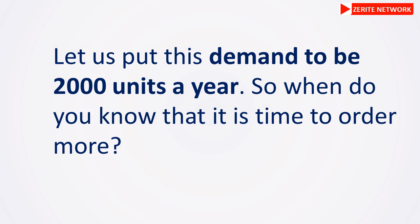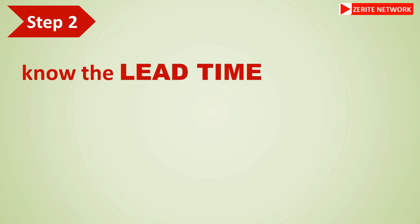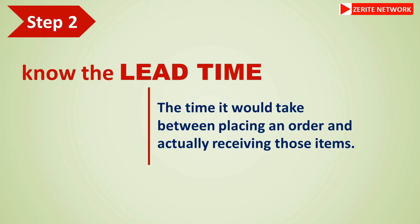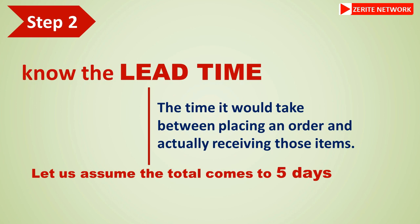So when do you know it's time to order more units? Remember, you cannot order blindly because that means incurring pointless costs. What you need to know next is lead time — that is, the time it takes between placing an order and actually receiving those items. If you are employed and in charge of procurement, you also need to factor in the time taken by your purchasing department to execute these orders. Let's assume the total lead time is five days.